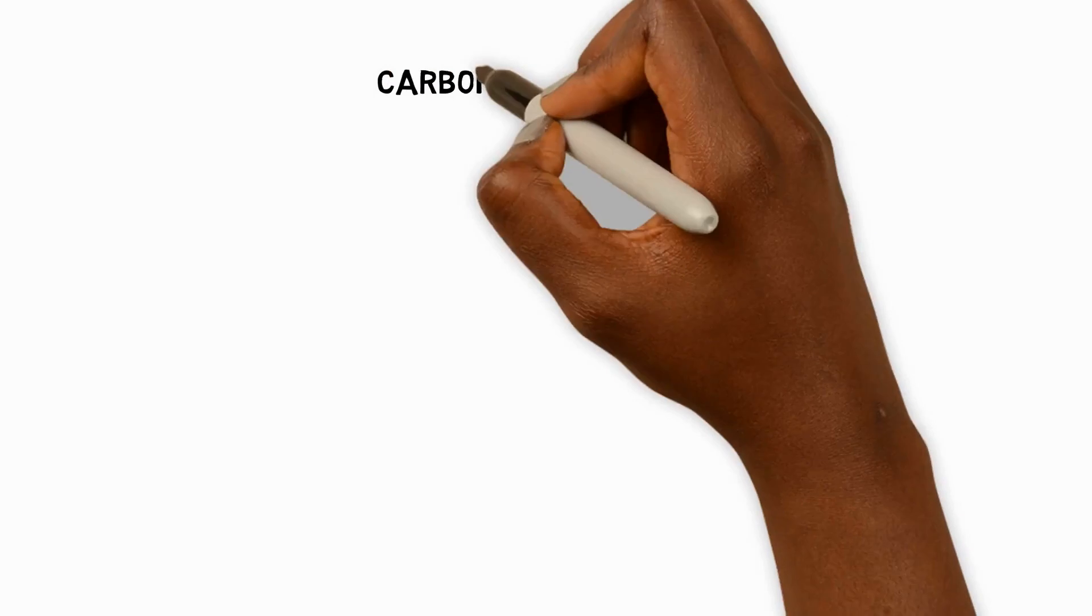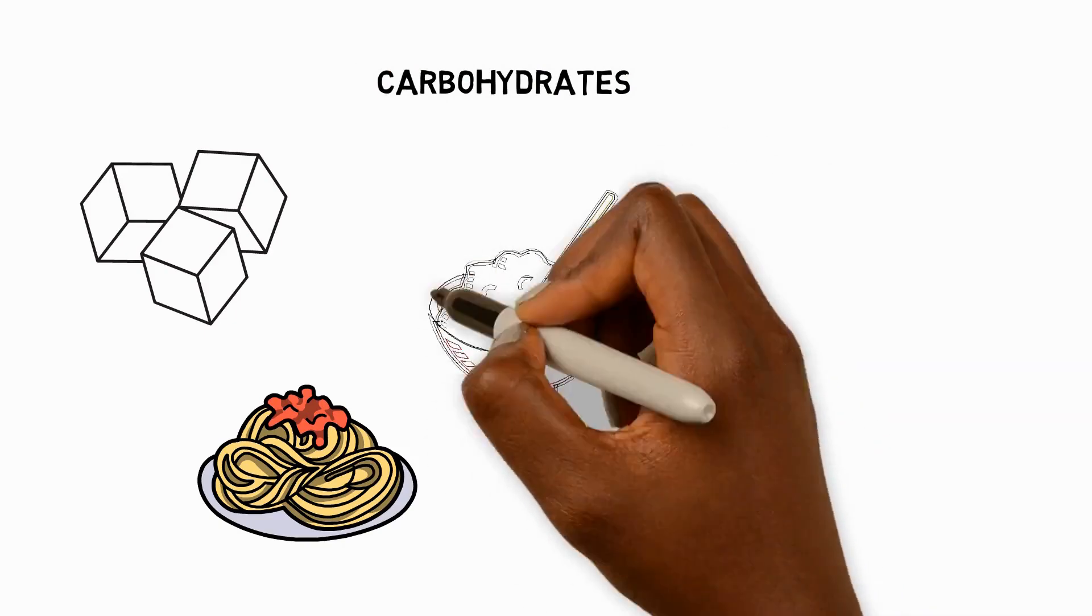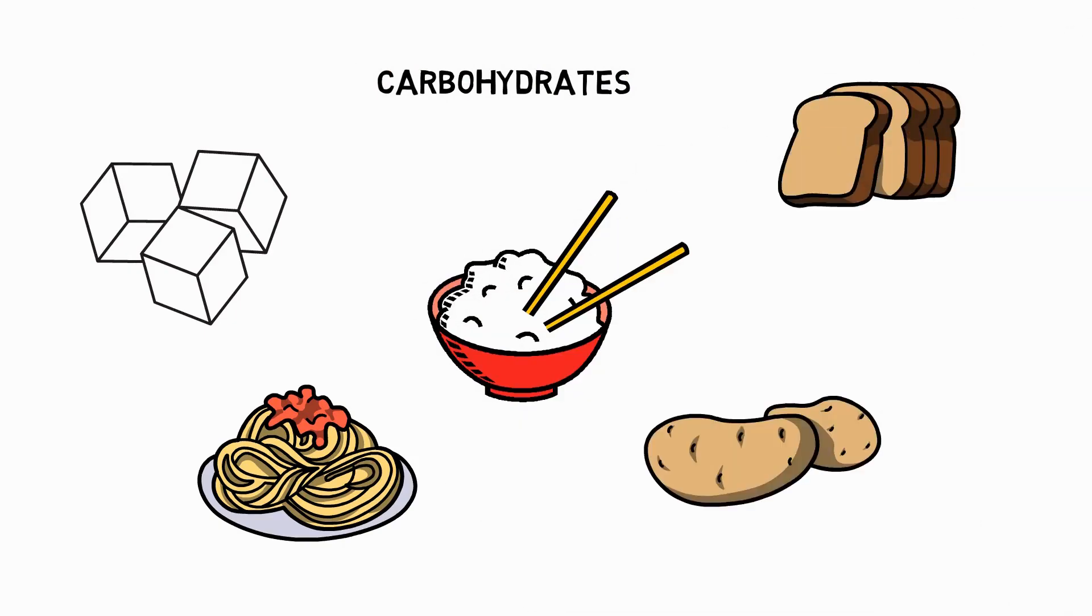First up, carbohydrates. These foods give us energy quickly, like sugar, or over a long period of time, like bread.